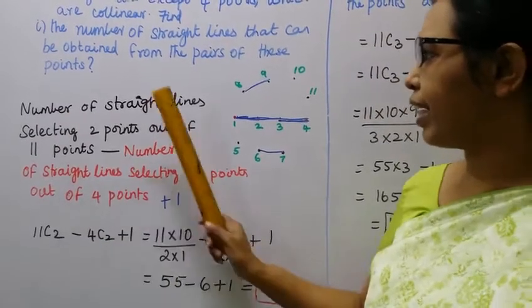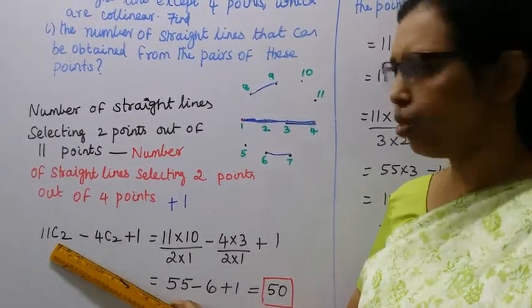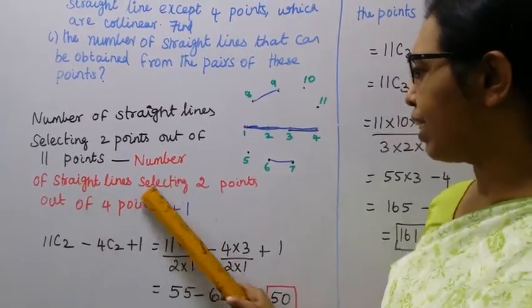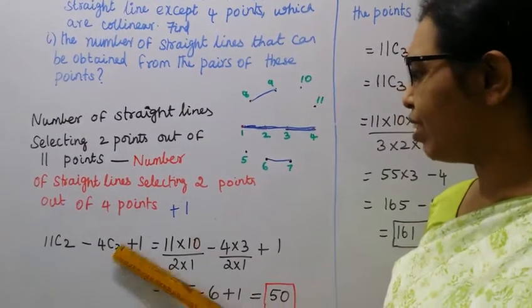That is number of straight lines selecting two points out of eleven points: 11C2. Minus number of straight lines selecting two points out of four points: minus 4C2.